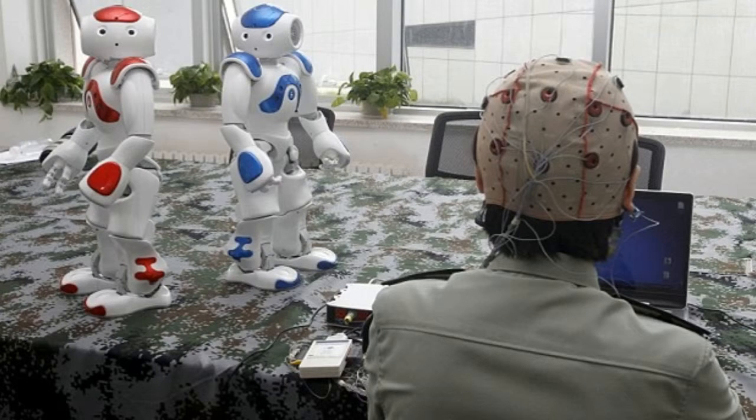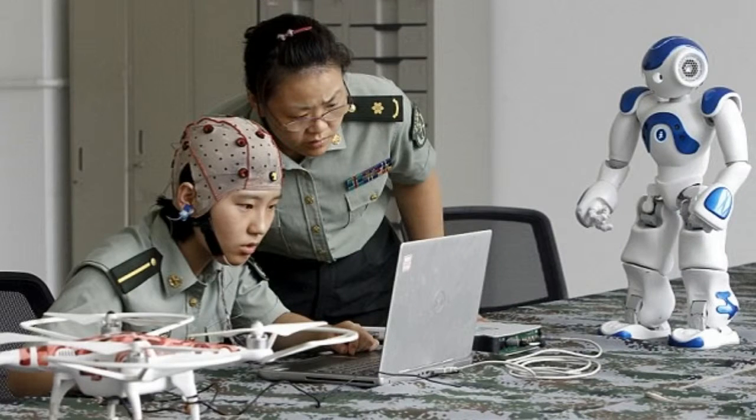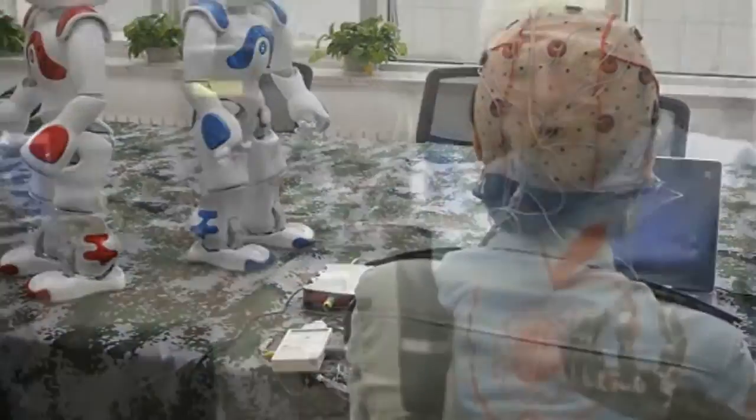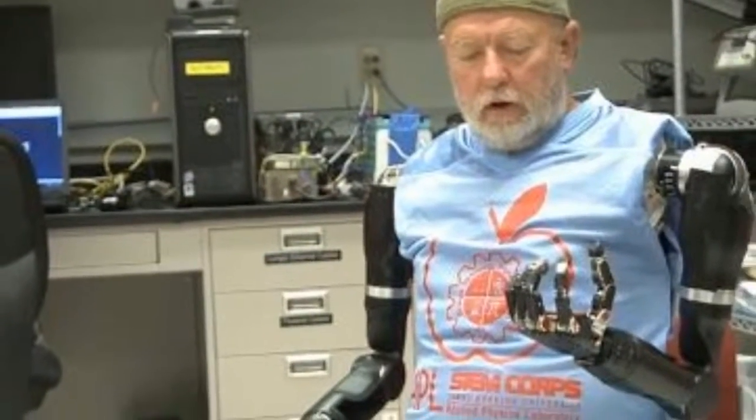The technology uses a brain-computer interface known as an electroencephalograph, which uses electrodes embedded in a cap to detect tiny changes in the electrical activity of the brain. By training a computer to recognize particular patterns that accompany commands, such as turn left or turn right,